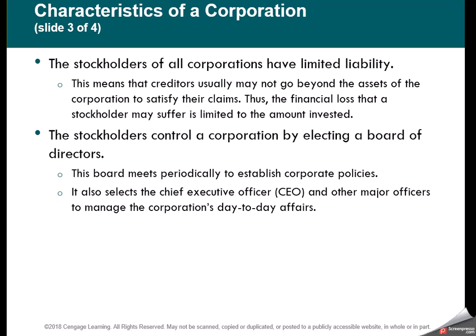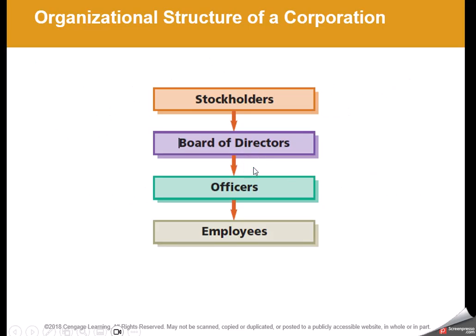Stockholders control the corporation by electing a board of directors. The board of directors should be at arm's length from the corporation so that they are able to make unbiased decisions on the long-term outlook of that company. The CEO of the company reports directly to them. So our stockholders are the owners, they elect the board of directors, the officers report back to the board of directors, and the employees report to the officers.